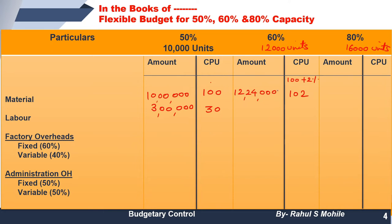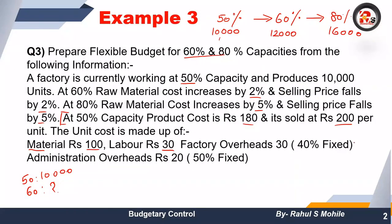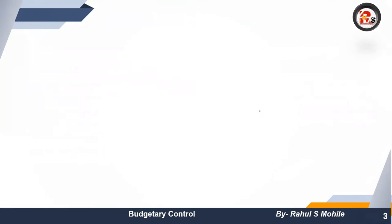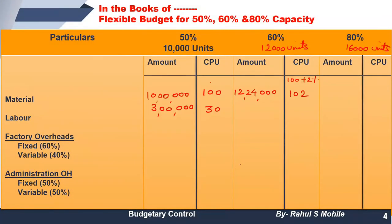At 80% capacity, raw material cost increases by 5%. So material per unit becomes 105. Multiply 105 by 16,000 and we get 16,80,000. That is the material amount at 80% capacity. So material has been calculated for all three capacity levels.